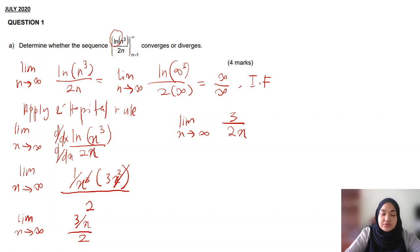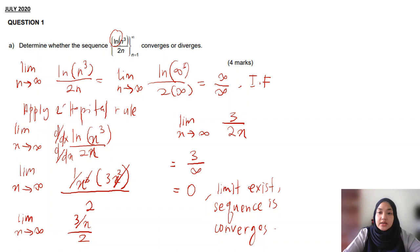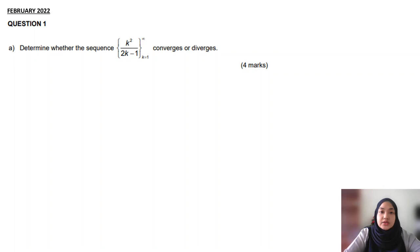You substitute x approaching to infinity and you get 3 over infinity, which equals 0. Meaning that the limit exists. Since the limit exists, the sequence is converged. That's the answer for July 2020. We proceed to the next example for sequence so that you master how to do the sequence question.